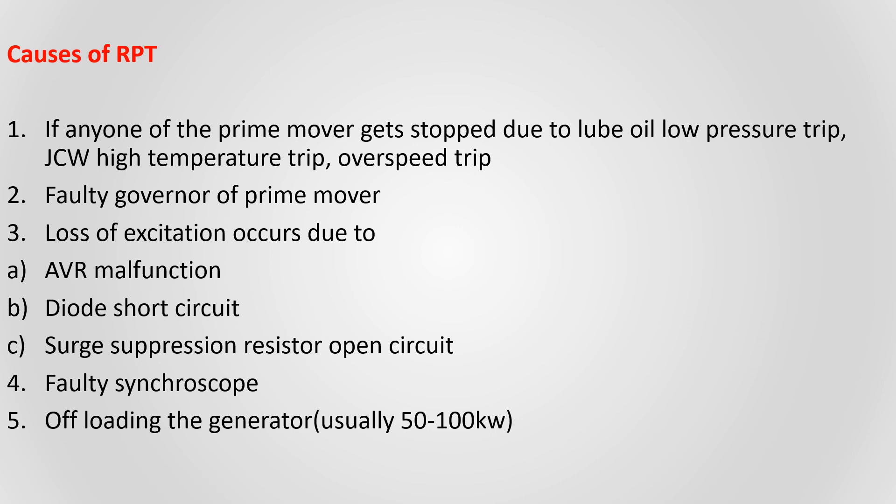If any one of the prime movers gets stopped due to lube oil low pressure trip, jacket cooling water high temperature trip, or overspeed trip — these are the main trips for the safety of the prime mover. If any one of these trips happens, the governor has to cut off the fuel supply to the prime mover, then the prime mover gets stopped, and then reverse power flow will occur. A faulty governor of the prime mover can also cause this.